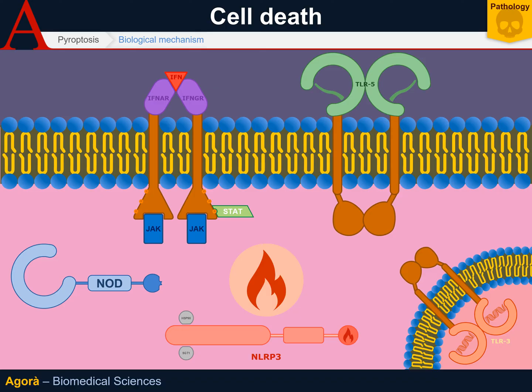However, when remarkable potassium flows out of the cell or strong radical stress occurs, the disassociation of the two inhibitor proteins leads NALP3 to a different pathway — that is to say, pyroptosis.